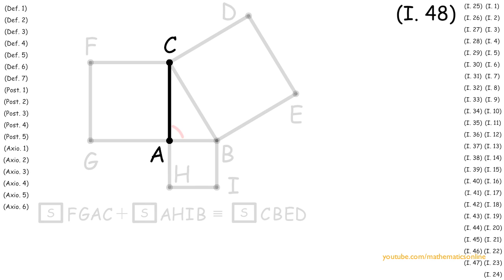First, with point A and line AC, we apply Proposition 11 to construct a perpendicular line JA. Therefore, angle JAC is congruent to a right angle.